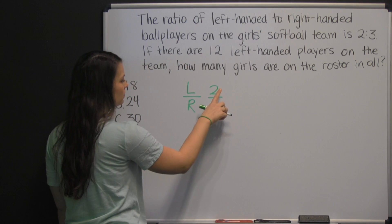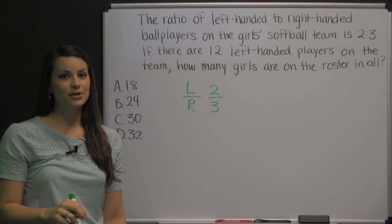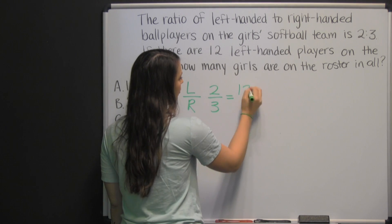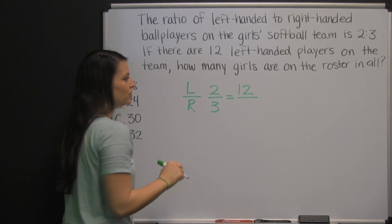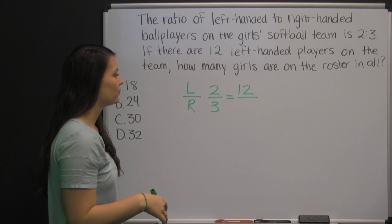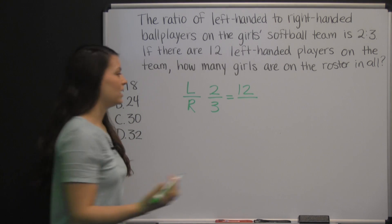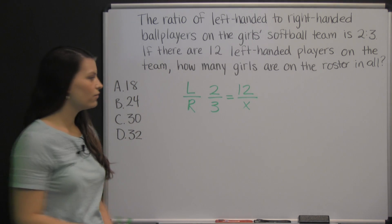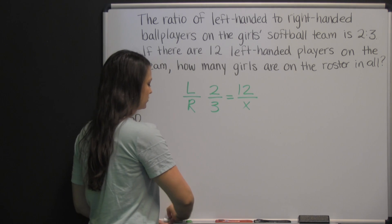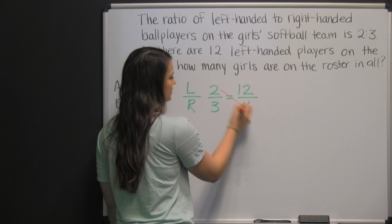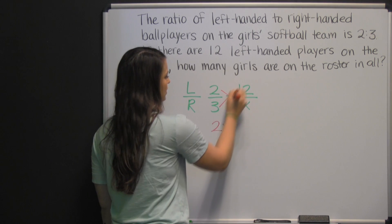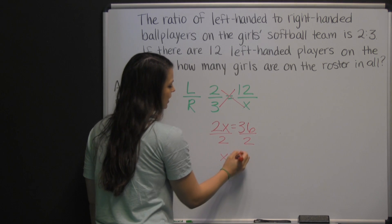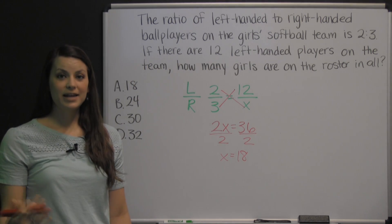That means there are two left-handed players for every three right-handed players. We are told that there are twelve left-handed players on the team. So we can write a proportion by putting our twelve left-handed players in the top position of our second ratio. What we don't know is how many right-handed players there are, so we put an x there. We can use cross-multiplication to find the number of right-handed players. Two times x is two-x, and three times twelve is thirty-six. Then we divide both sides by two, and x is eighteen. That means there are eighteen right-handed players.